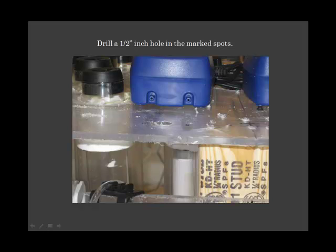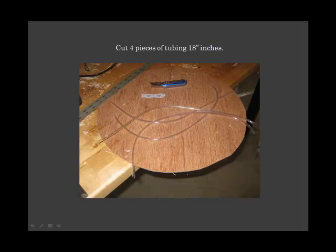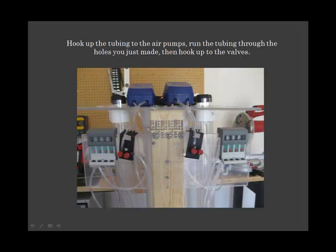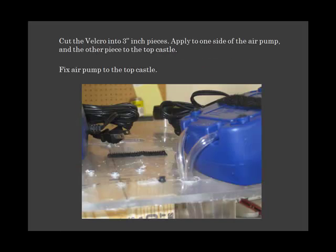Drill a half inch hole. Cut four pieces of tubing 18 inches each. Hook up the tubing to the air pumps. Run the tubing through the holes you just made. Then hook up to the valves.